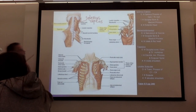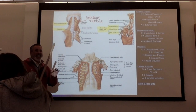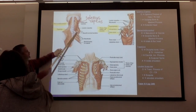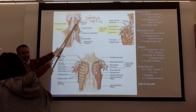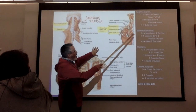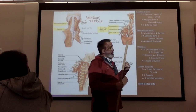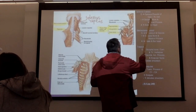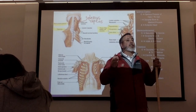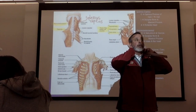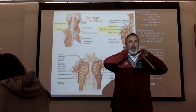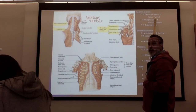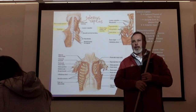Splenius capitis is this muscle right here. It originates from the spinous processes of some cervical and thoracic vertebrae — you don't have to know which ones. It inserts itself in the mastoid process, and also in the occipital bone.